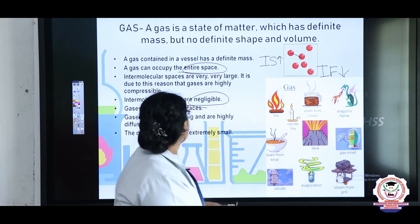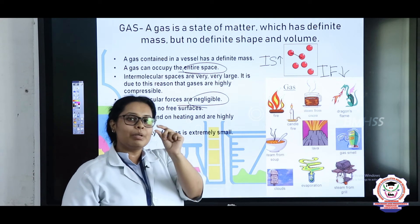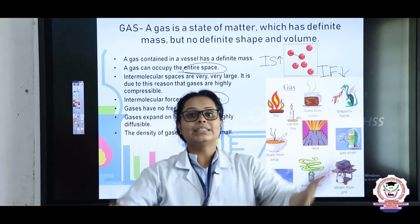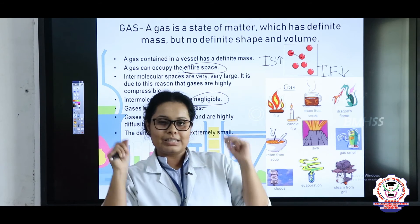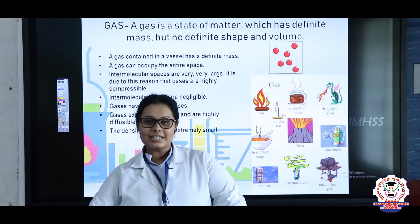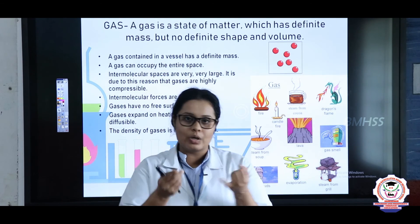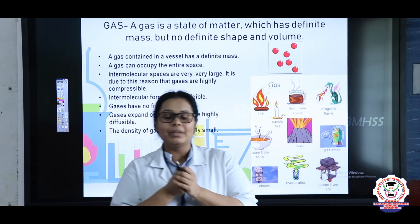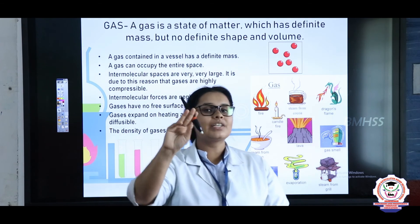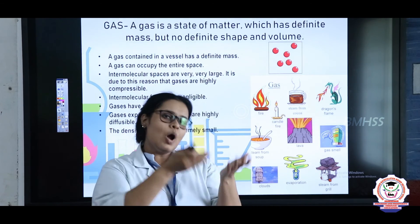Diffusion is mixing. The density of a gas is extremely small — it is very, very small because the space between molecules is too much. If the space is too much, the weight and mass will be less. So, we have now discussed solids, liquids, and gases — the intermolecular distances and forces between them, as well as the density of each state.